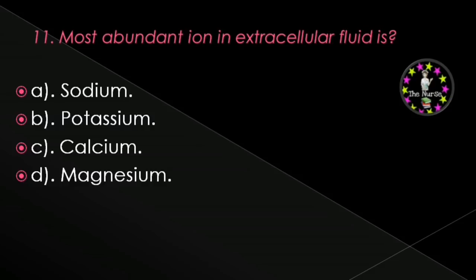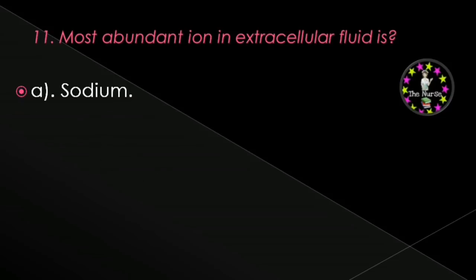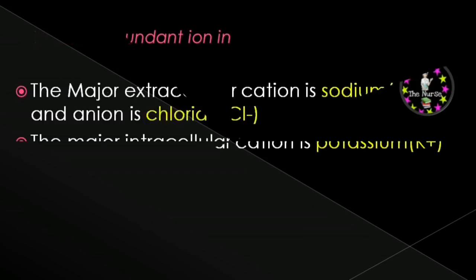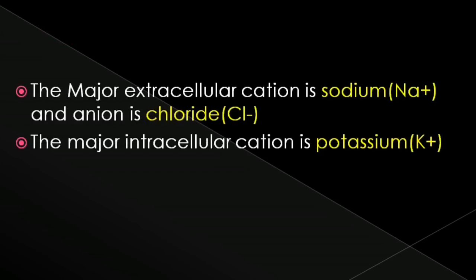Next question: Most abundant ion in extracellular fluid is — sodium, potassium, calcium, or magnesium? Correct answer is sodium. The major extracellular cation is sodium and the anion is chloride. The major intracellular cation is potassium.